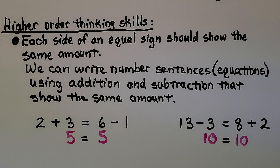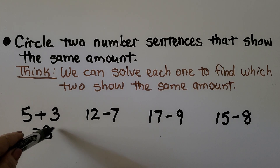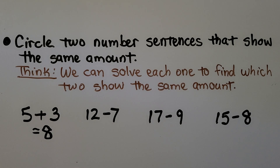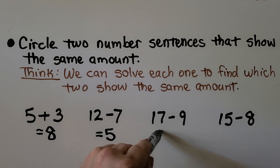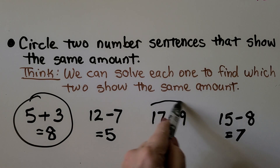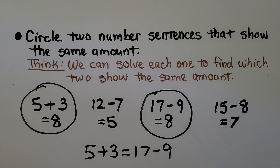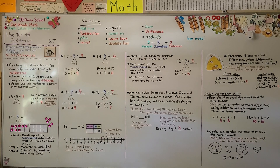We need to circle two number sentences that show the same amount. Solving each: 5 plus 3 equals 8; 12 minus 7 equals 5; 17 minus 9 equals 8; 15 minus 8 equals 7. We can easily see which two show the same amount: 5 plus 3 is 8, and 17 minus 9 is also 8. So 5 plus 3 is equal to 17 minus 9.